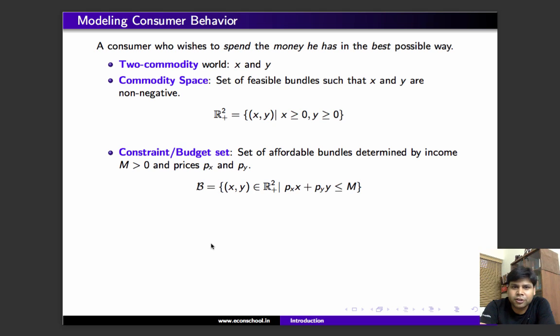The constraint of this consumer is the set of all bundles that cost less than or equal to M. Formally, this is B = {(x,y) ∈ R²₊ | pₓx + pᵧy ≤ M}.